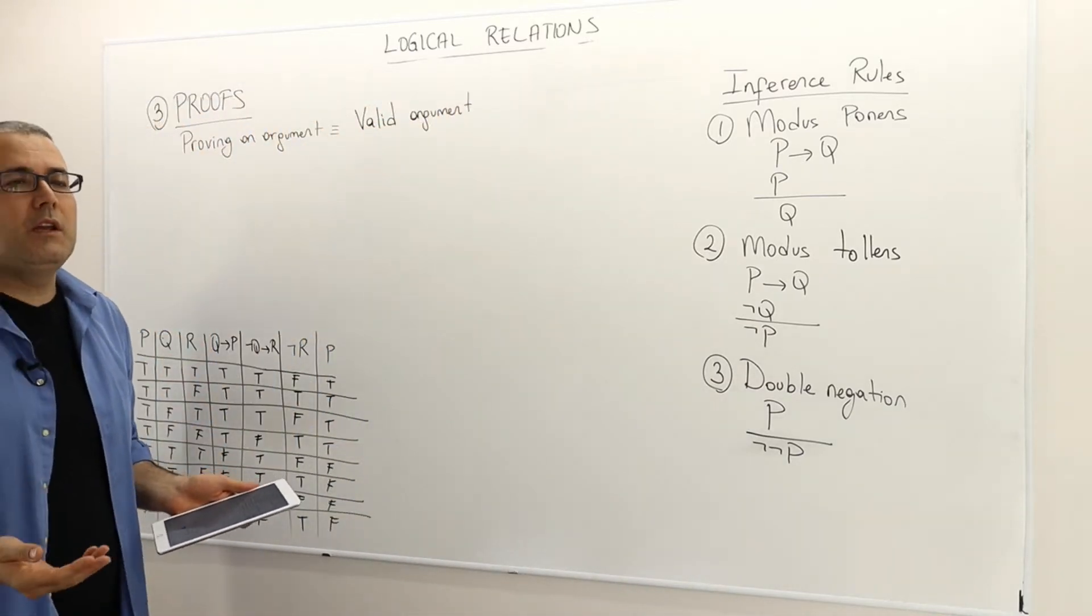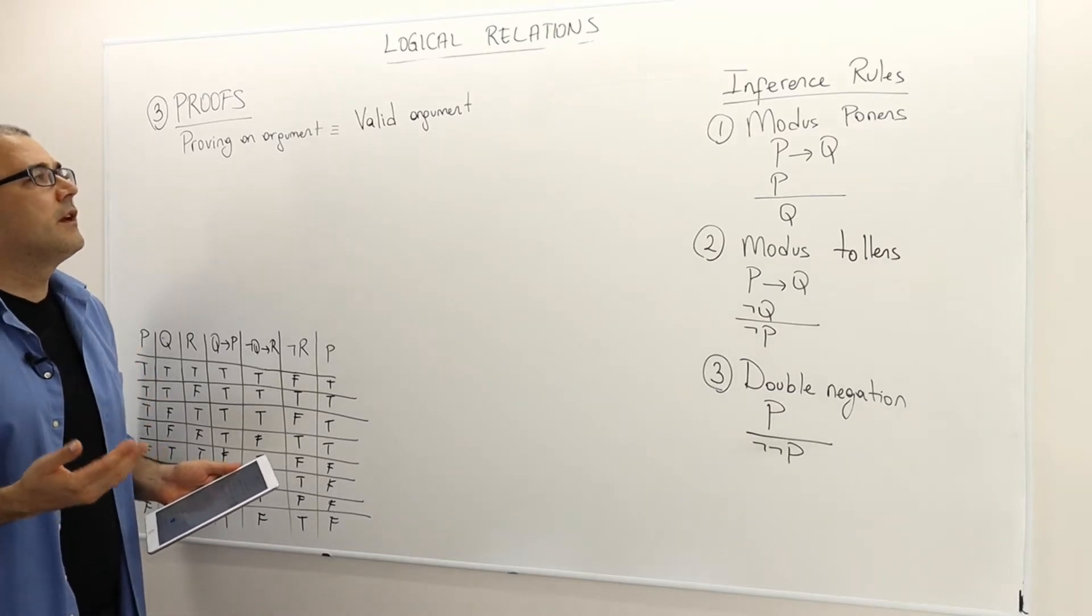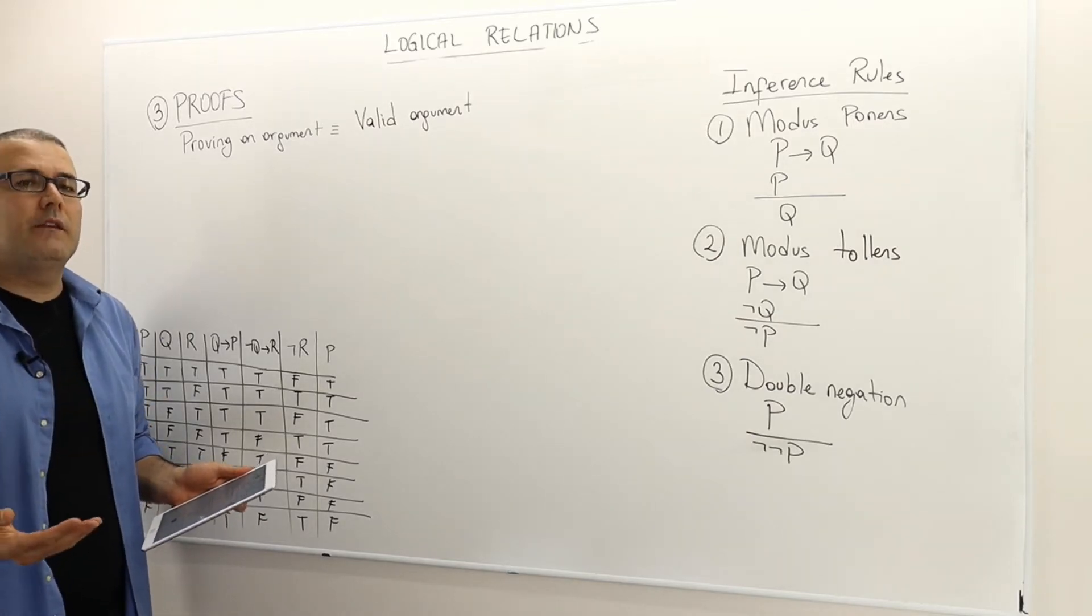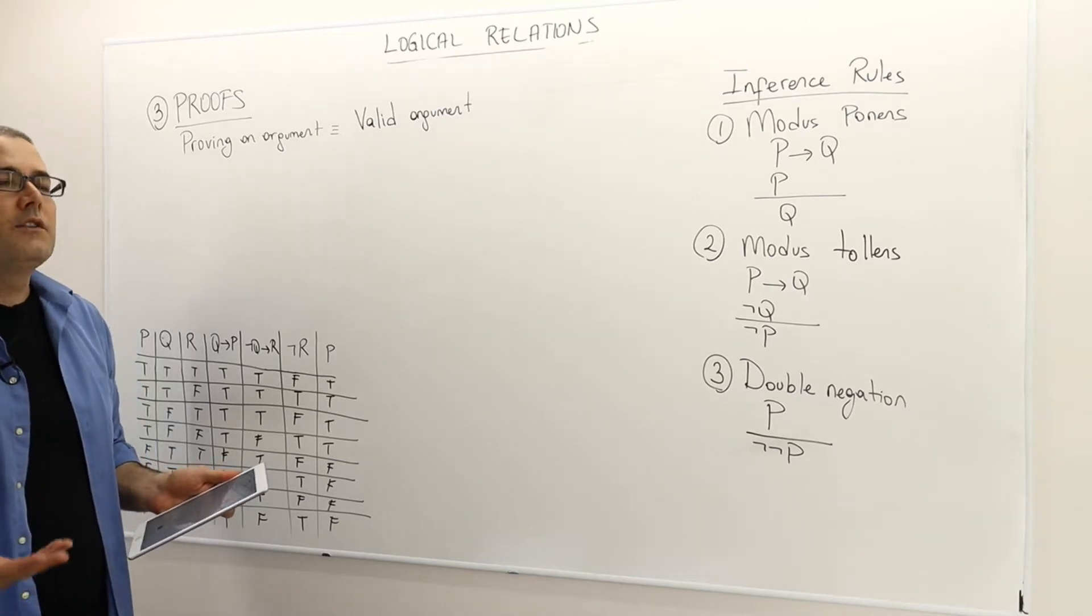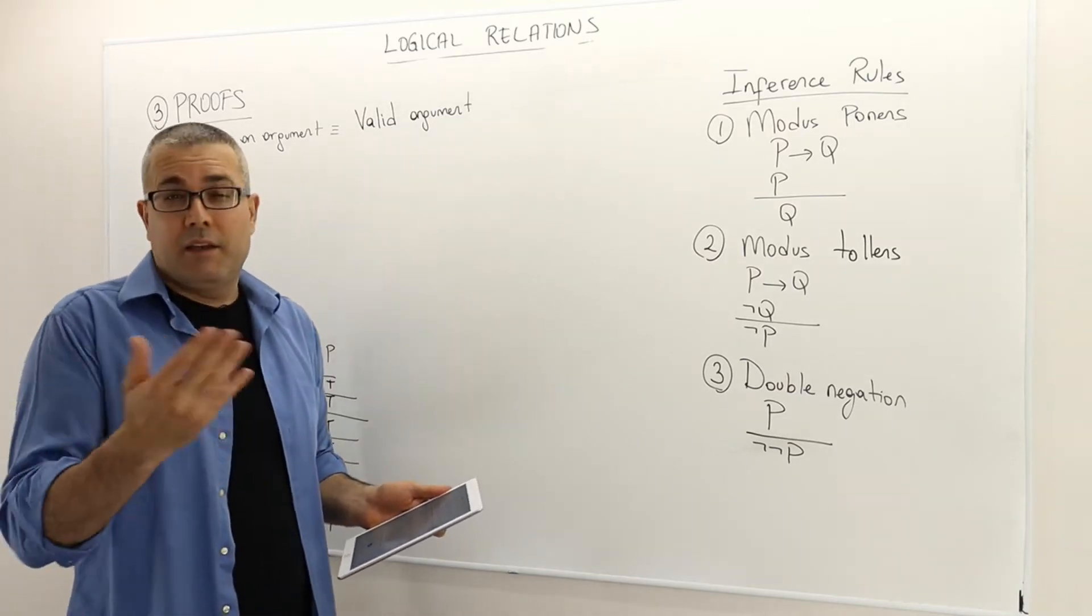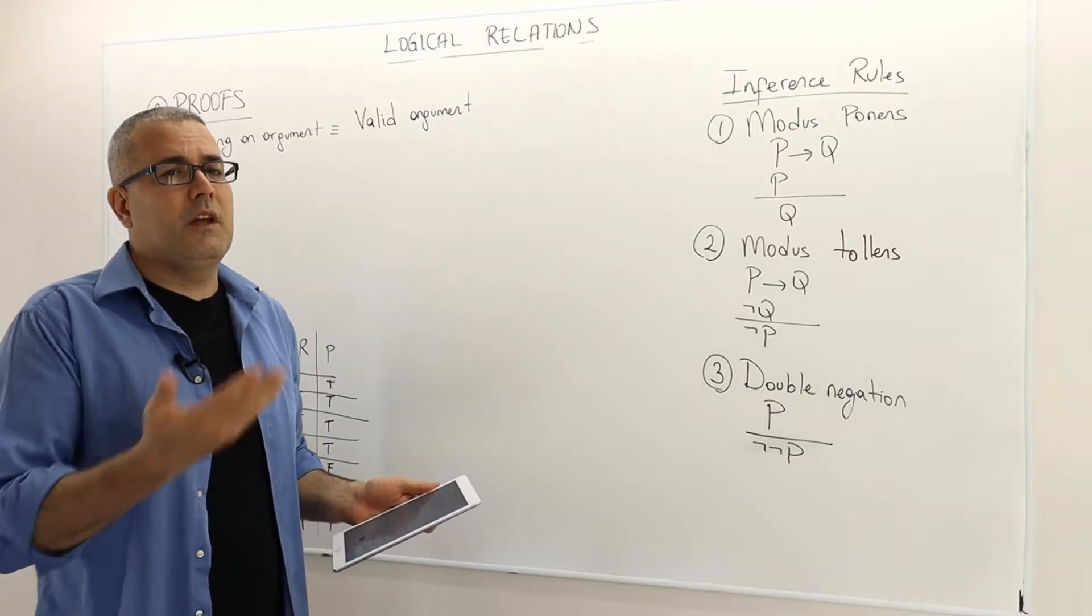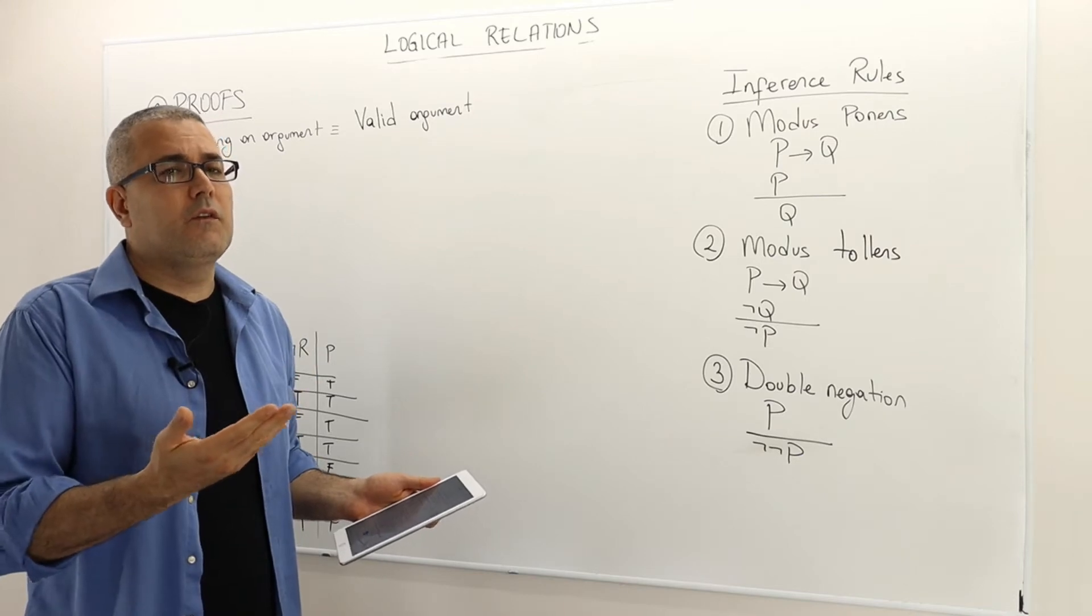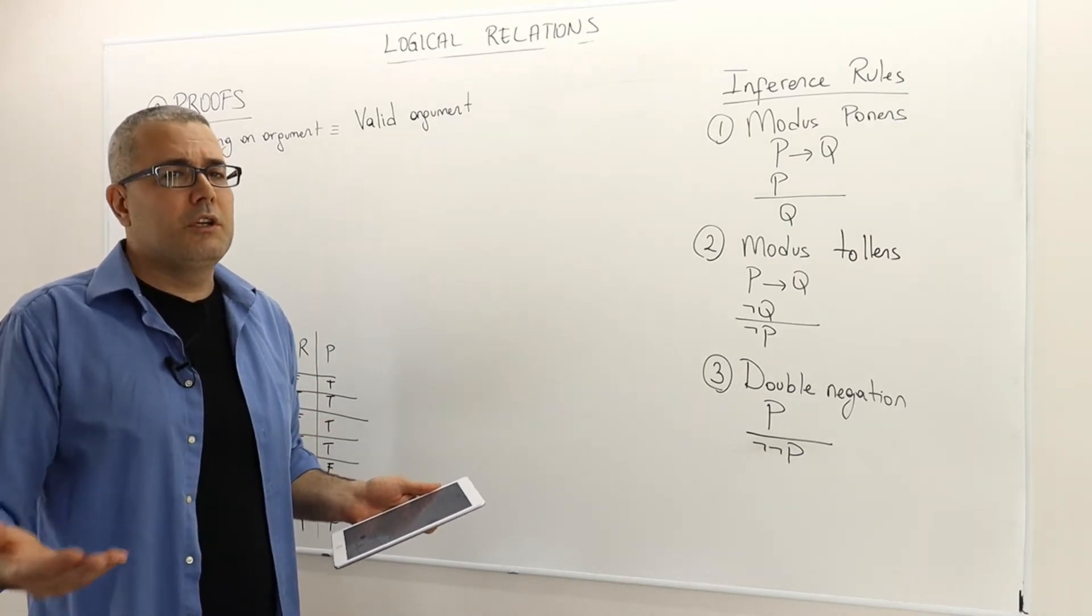So what does it mean proving an argument? Proving an argument is equivalent to showing that the argument is in fact a valid argument. Therefore, by the definition of validity, proving an argument means that when the premises of an argument are true, then the conclusion must be true.